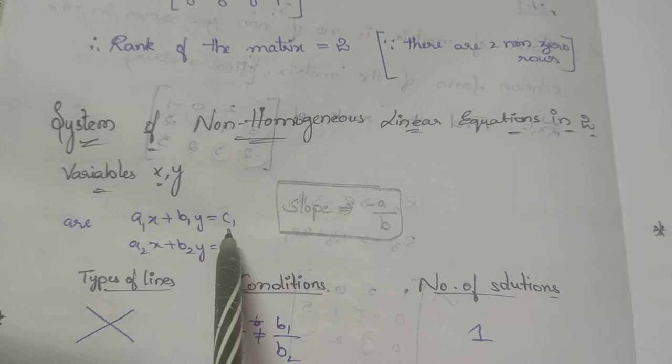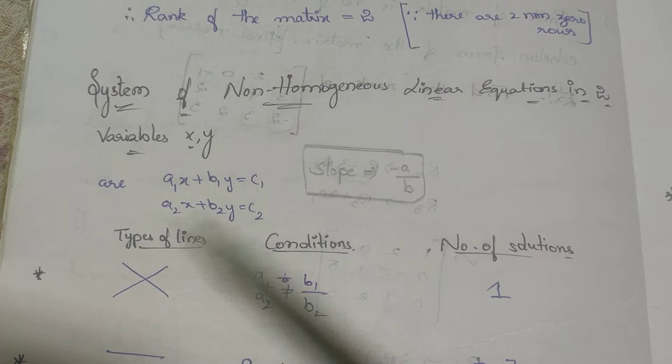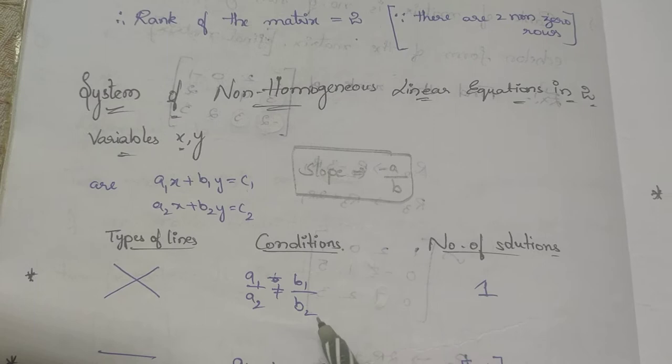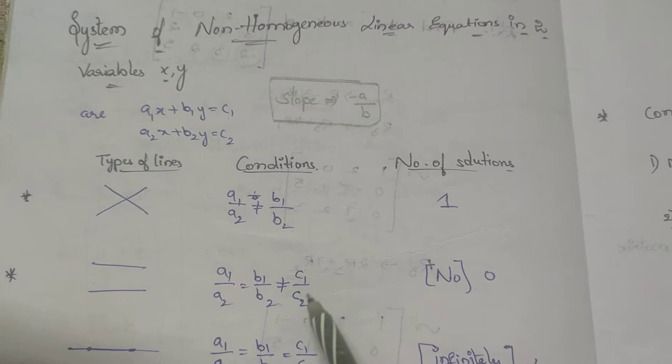Next, types of lines: the given lines may be intersecting, parallel, or coincident. If they are intersecting, the condition is a1/a2 ≠ b1/b2 — this is the 10th class condition — and there is only one solution. If they are parallel lines, a1/a2 = b1/b2 ≠ c1/c2, and they never intersect, so there are zero solutions.